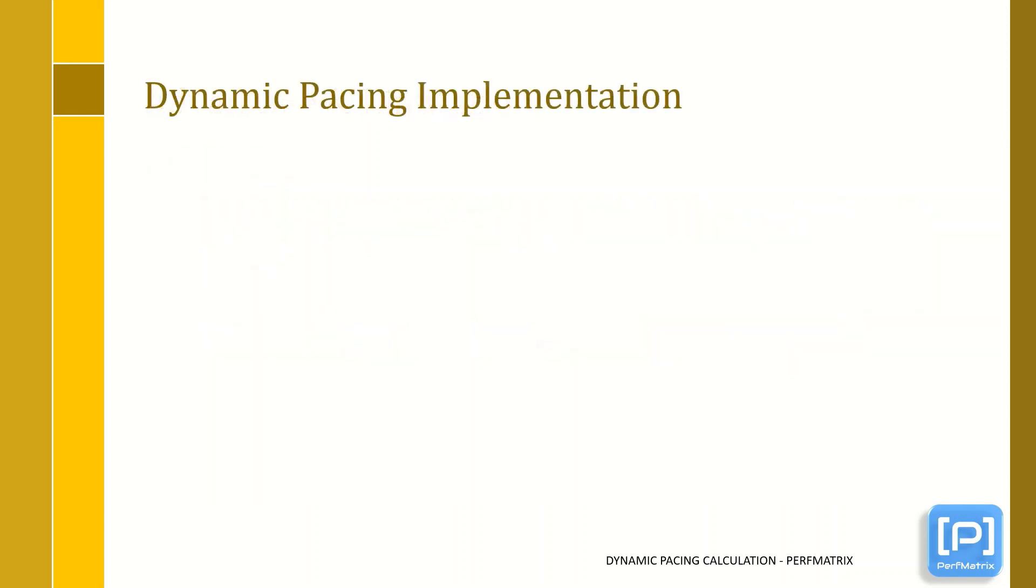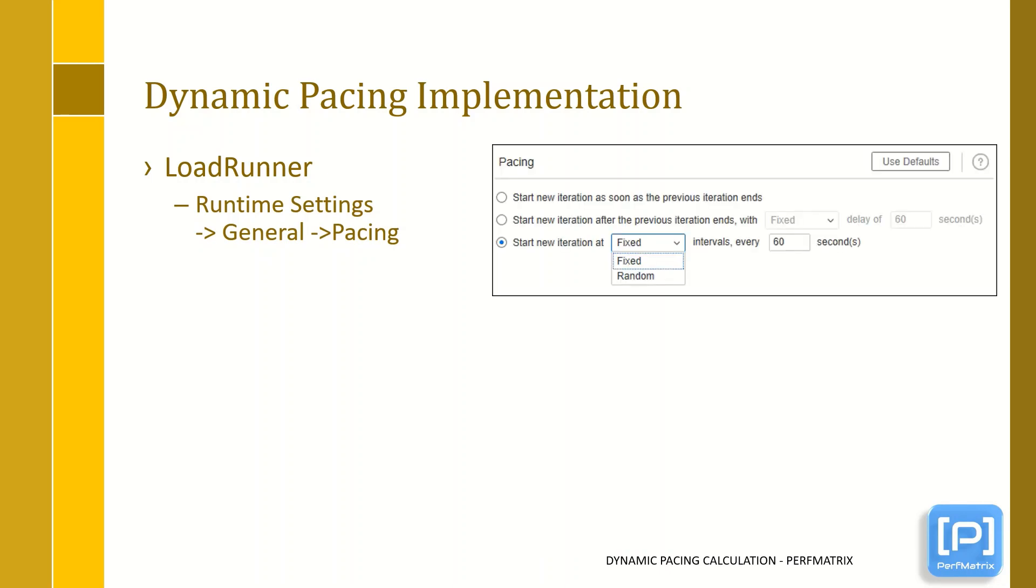Now come to the implementation part. To implement the dynamic pacing in LoadRunner, you need to go to runtime settings and then pacing tab and select start the new iteration at fixed or random interval and provide the calculated iteration value. The value can be calculated from the formula which we discussed before.